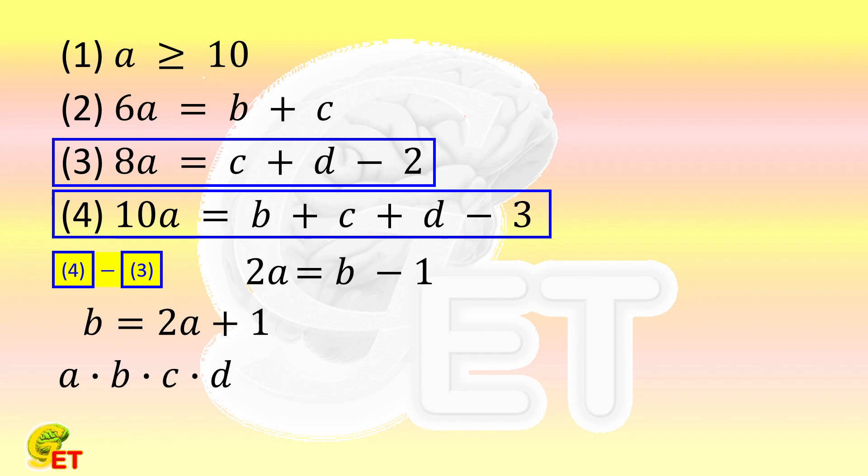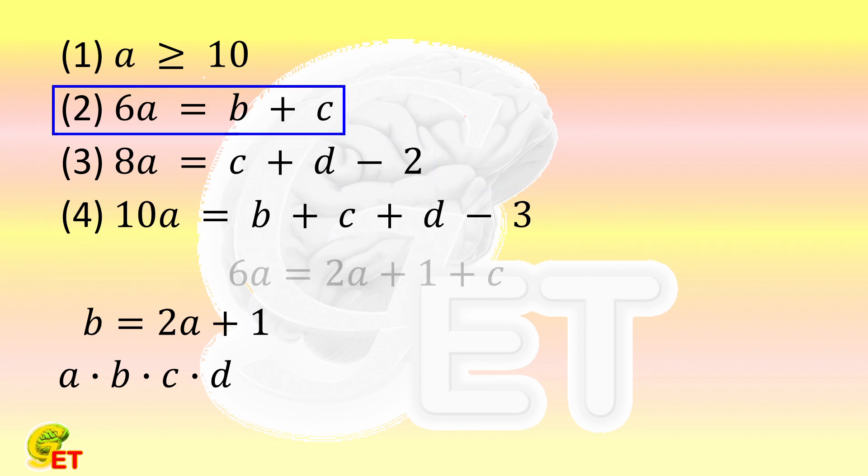Bringing this into the second equation, we get that six times A equals twice A plus 1 plus C. So C is equal to 4 times A minus 1.